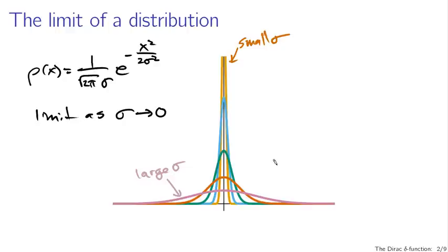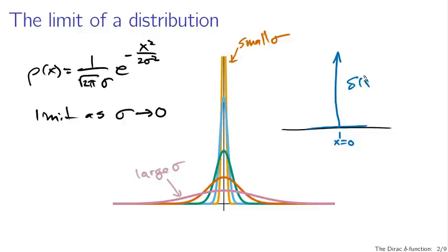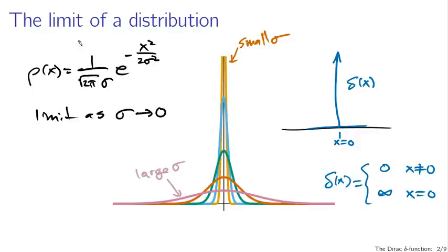In the limit, we have a distribution that is infinitely narrow and infinitely tall. It has absolutely no support for any values of x other than x equals 0. This would be delta of x as a distribution. You often see delta functions written as: delta of x equals 0 for x not equal to 0 and infinity for x equals 0. But this isn't sufficiently accurate because it doesn't capture that the delta function is the limit of a distribution with a specified integral—the integral from minus infinity to infinity of delta of x dx equals 1.